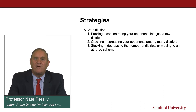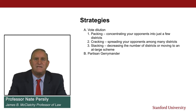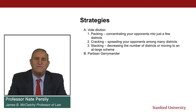So packing, cracking, stacking, and kidnapping are all different strategies when it comes to drawing districts. Now let's talk about the different types of gerrymanders. First is the partisan gerrymander, where the political party in charge tries to draw districts that favor its candidates and supporters. In a Democratic gerrymander, for example, they'll try to draw as many districts where Democrats are narrowly going to win and minimize the number of districts Republicans will win — sometimes achieved by both packing and cracking opponents into as few districts as possible.